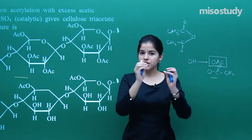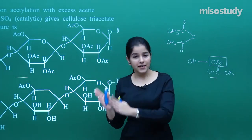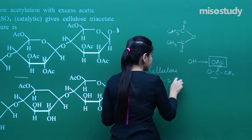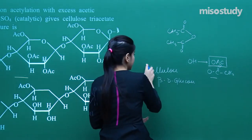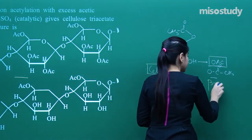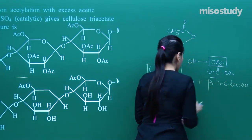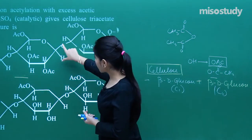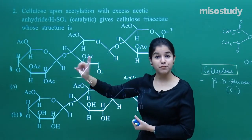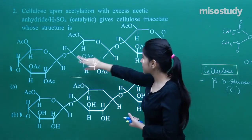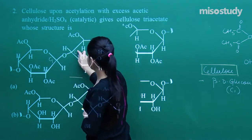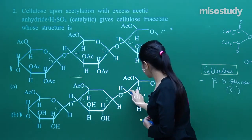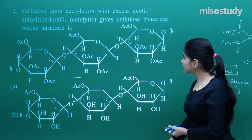Cellulose is actually beta-D-glucose units connected via C1 and C4 linkages. Looking at option one, there is a beta glycosidic linkage — C1 is connected to C4, then again C1 to C4, C1 to C4. That is how the connections are made in cellulose.